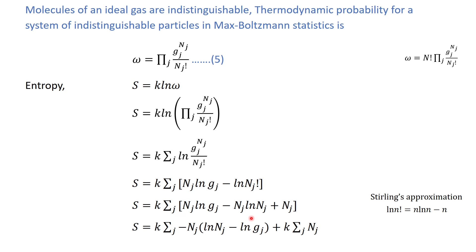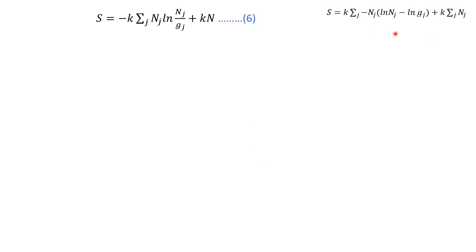We can further simplify by taking minus nj as a common factor, so we have log nj minus log gj. Taking k times summation of nj: since summation nj gives the total number of particles, we can write it as kN. And log nj minus log gj can be written as log(nj/gj). Let this be equation number six.